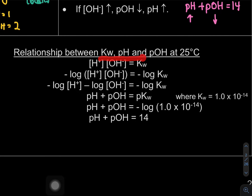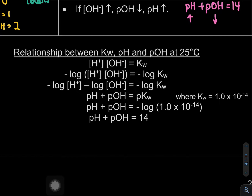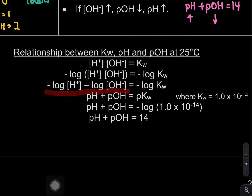Now the relationship between Kw, pH, and pOH. We know [H⁺][OH⁻] = Kw. To relate this to 'p' values, we take negative log on both sides: -log([H⁺][OH⁻]) = -log(Kw). Expanding: -log[H⁺] - log[OH⁻] = -log(Kw).